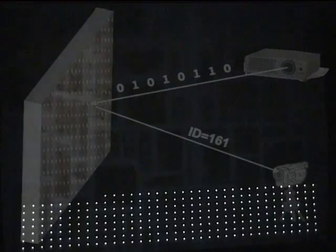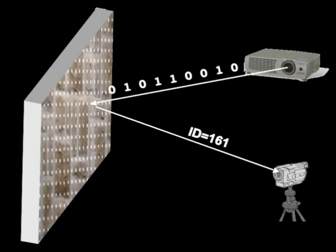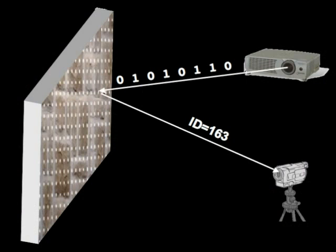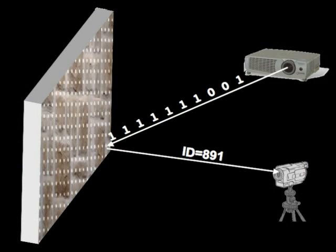The first projector-camera correspondences are determined by projecting a point pattern. Each point of the pattern has a unique ID which is binary coded. The binary code is projected at the corresponding point position. By finding the point in the camera image,